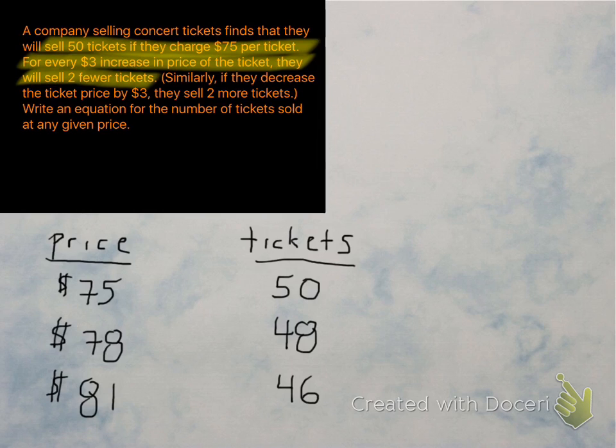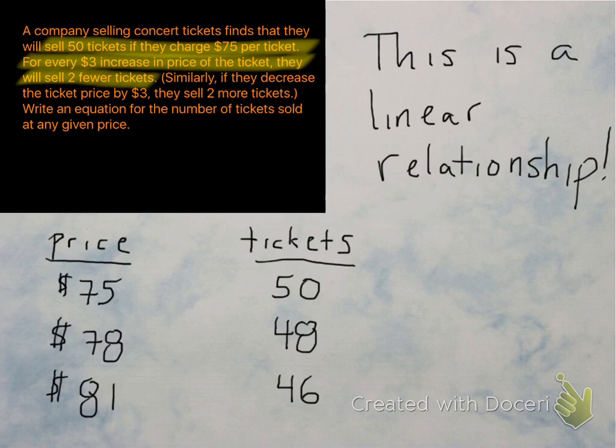So it seems like every time you increase the price by three, the tickets will go down by two. This is a linear relationship. Increase by three, down by two. Increase by three, down by two. Every single time.